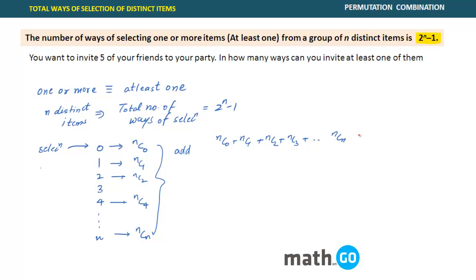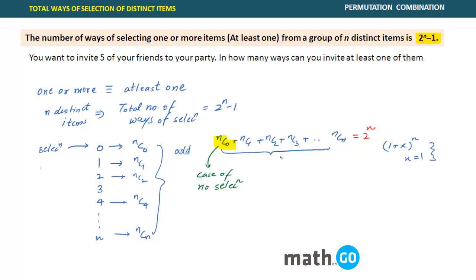The sum of binomial coefficients is 2 raised to power n. For those not comfortable with binomial, you can expand binomially and put x equal to 1. But remember this formula: sum of binomial coefficients is 2^n. In this case, I have included nC0, which represents the case of no selection — you did not select anything out of the n items. Since we want at least one selection, we subtract nC0. So nC1 + nC2 + ... + nCn equals 2^n minus 1, because nC0 is 1. This is the formula.